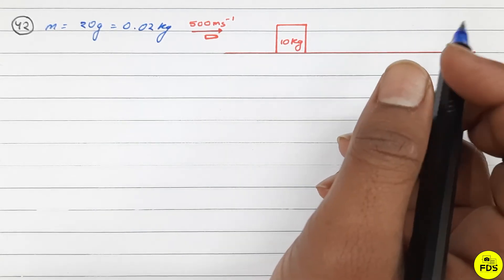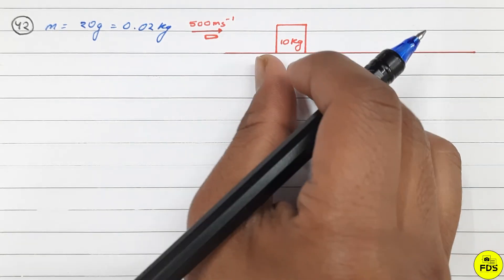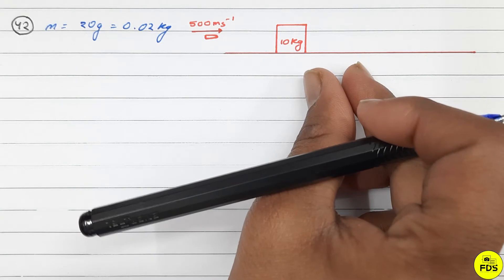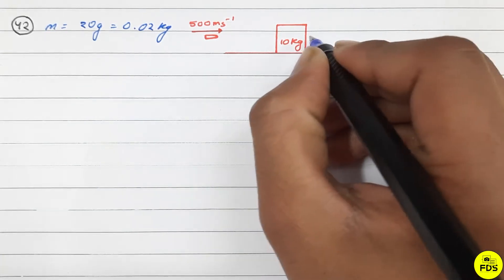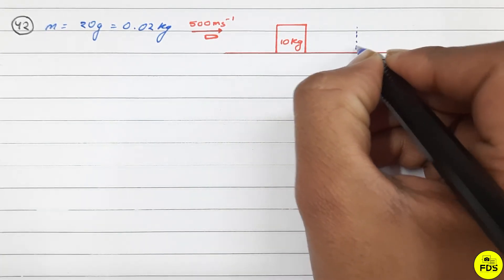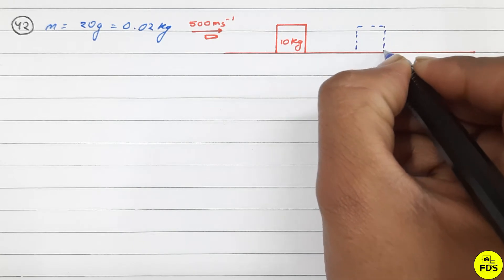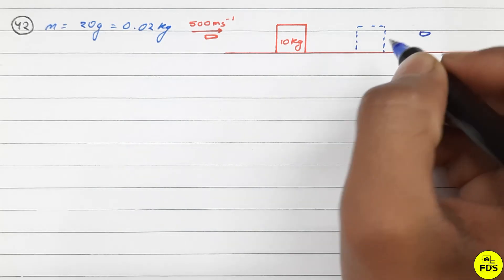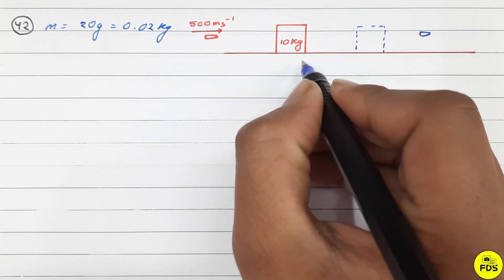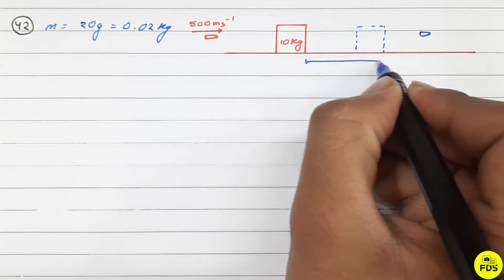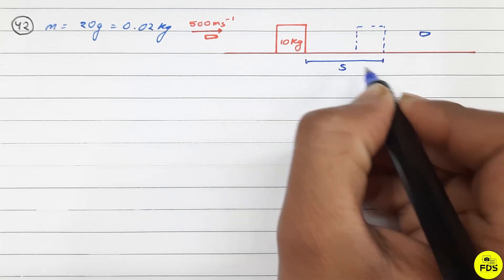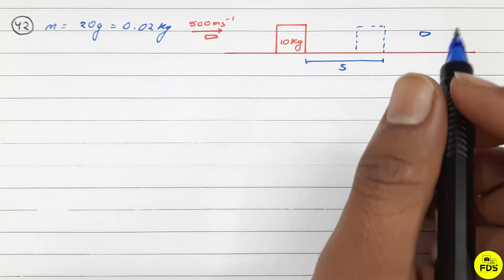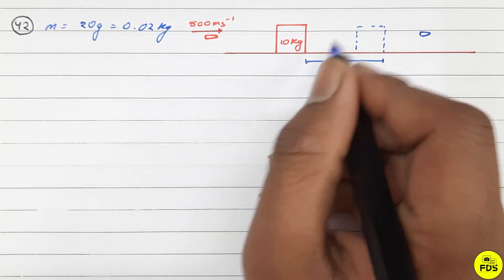So what happens is when the bullet passes through, the block slides 20 cm. The block moves this distance before coming to rest. We need to find the friction coefficient between the surface and the block.